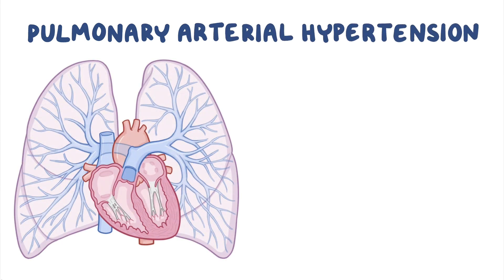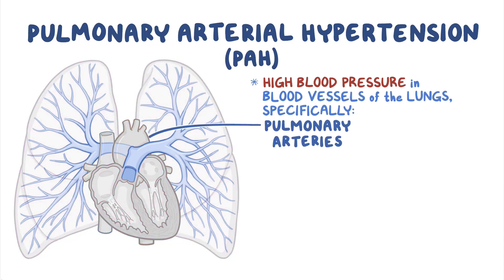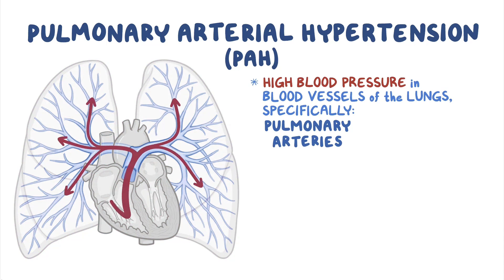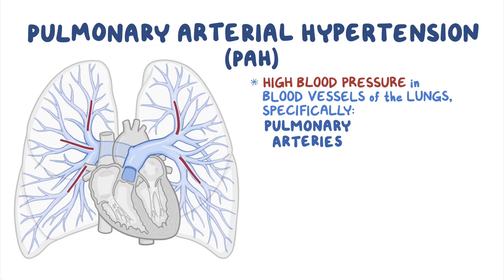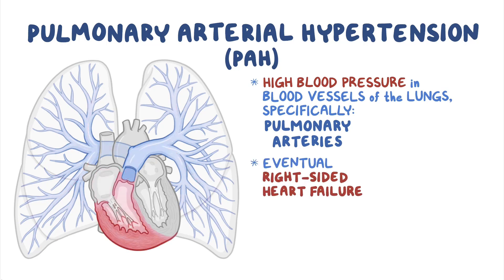Pulmonary arterial hypertension, or PAH, is a rare disorder characterized by high blood pressure in the blood vessels of the lungs, specifically the pulmonary arteries. The pulmonary arteries are blood vessels that carry blood from the right side of the heart through the lungs. When pulmonary arterial pressure rises, blood backs up into the right side of the heart, eventually leading to right-sided heart failure.